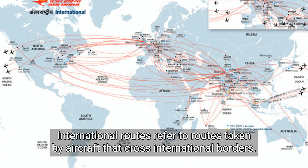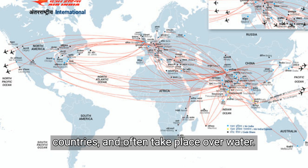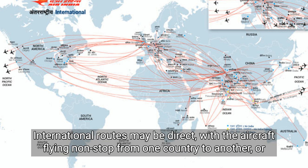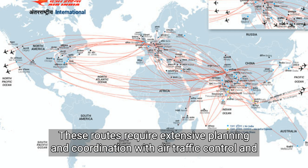International routes refer to routes taken by aircraft across international borders. These routes are typically used to transport passengers and cargo between countries and often take place over water. International routes may be direct, with the aircraft flying non-stop from one country to another, or they may have multiple stops along the way.